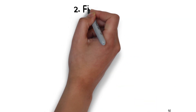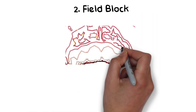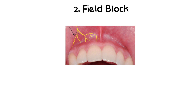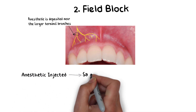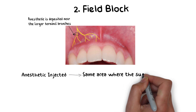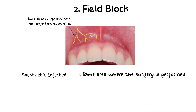The next type of injection technique is a field block. In the field block, the anesthetic solution is deposited near the larger terminal branches of the nerve, so the area anesthetized is much greater — most of the time it is the entire tooth. The local anesthetic is deposited near the same area where surgery is planned, just as with local infiltration.